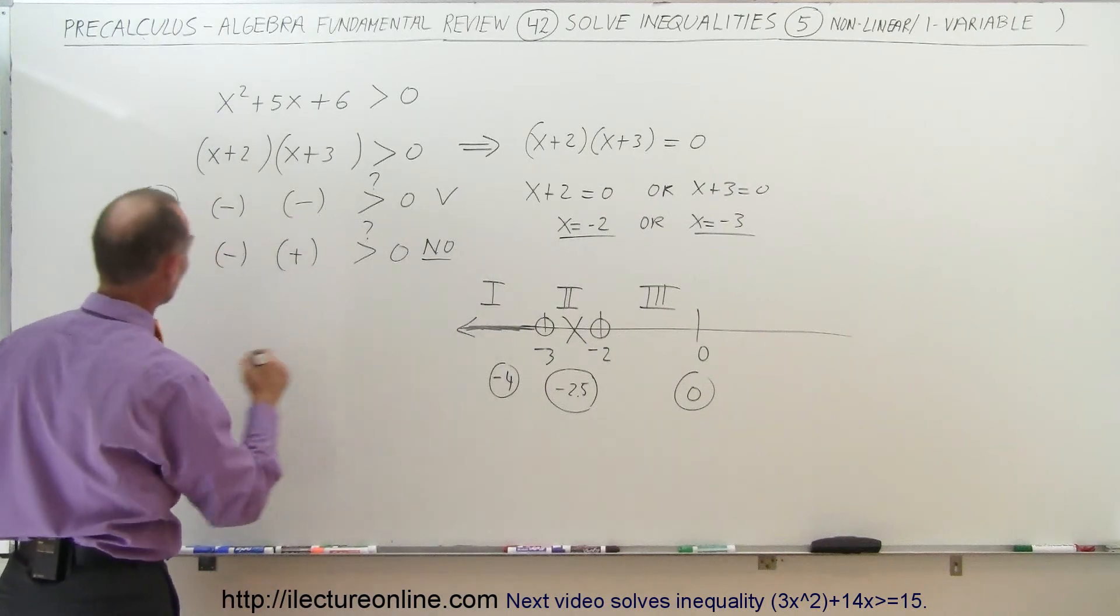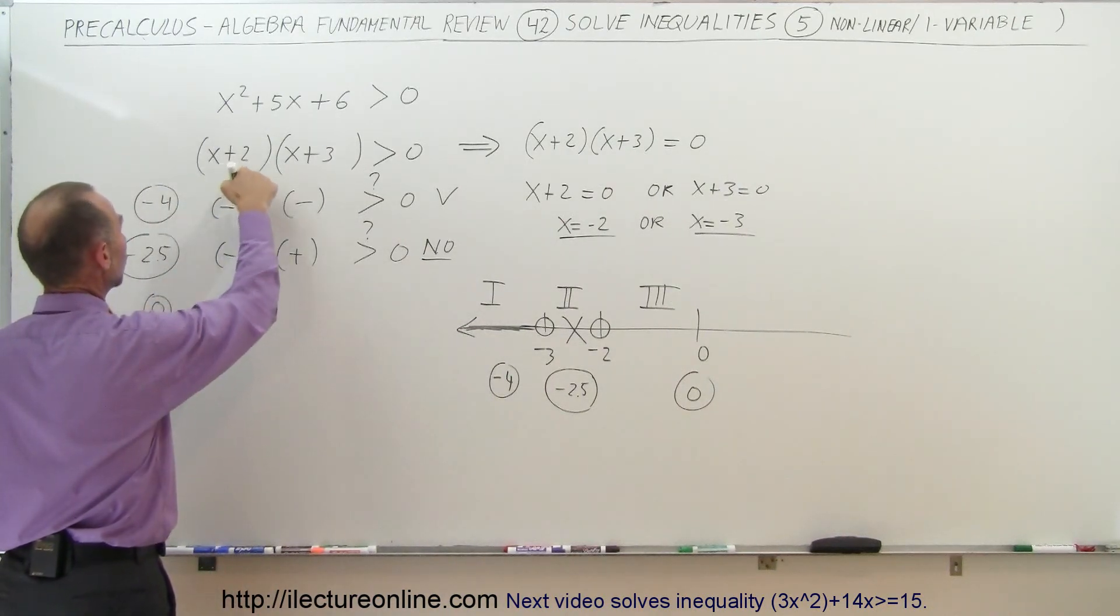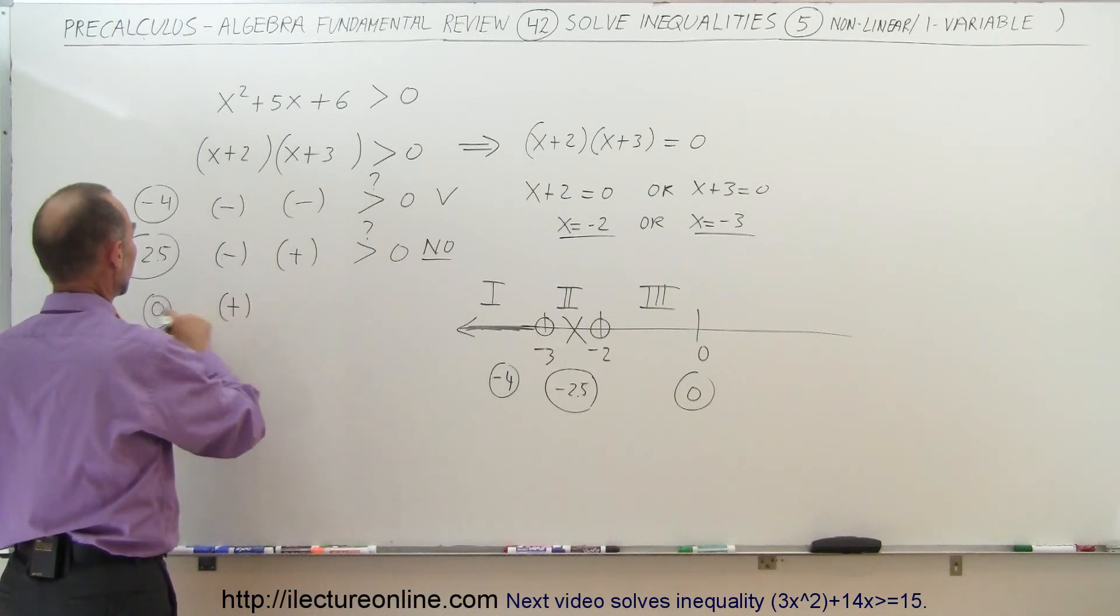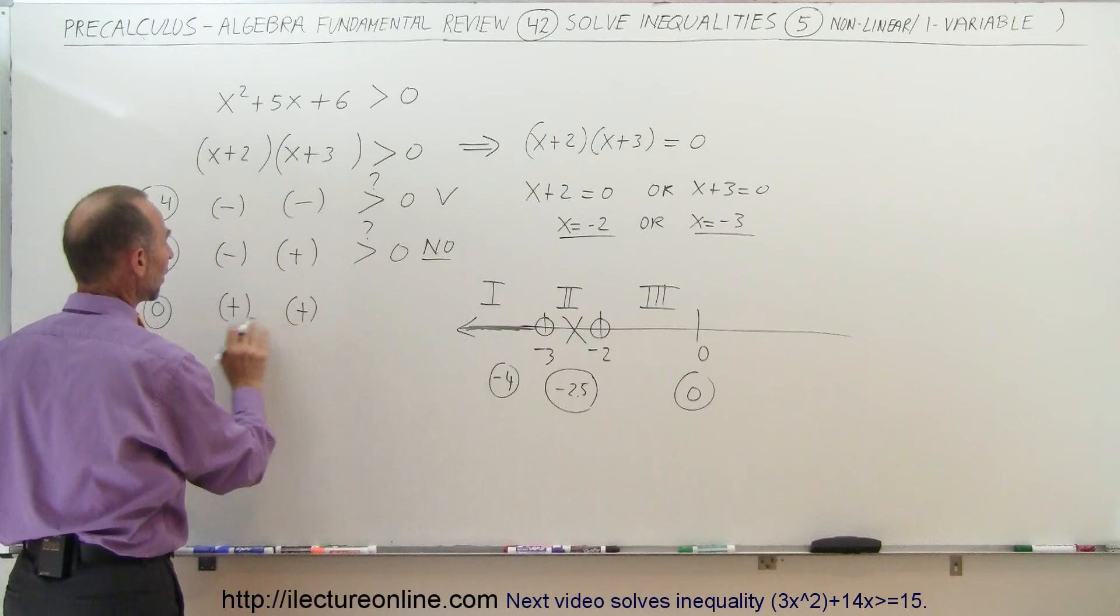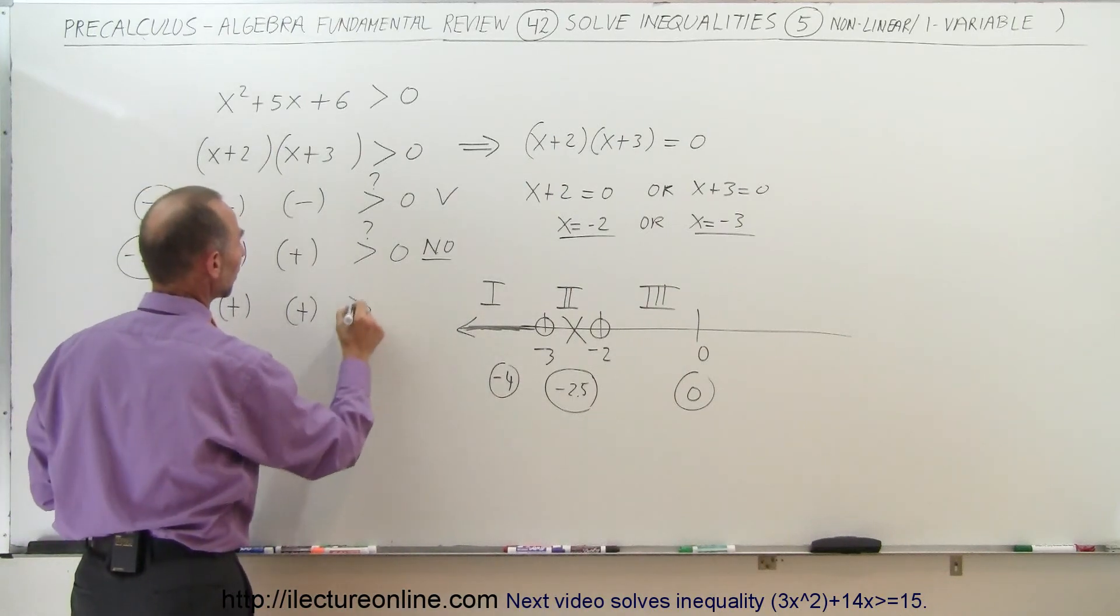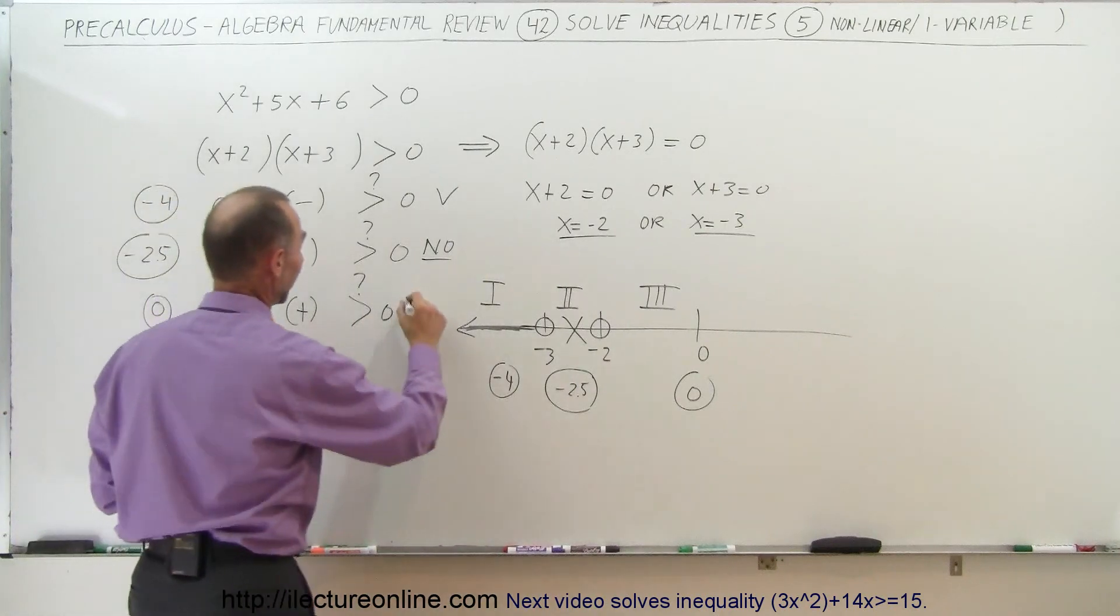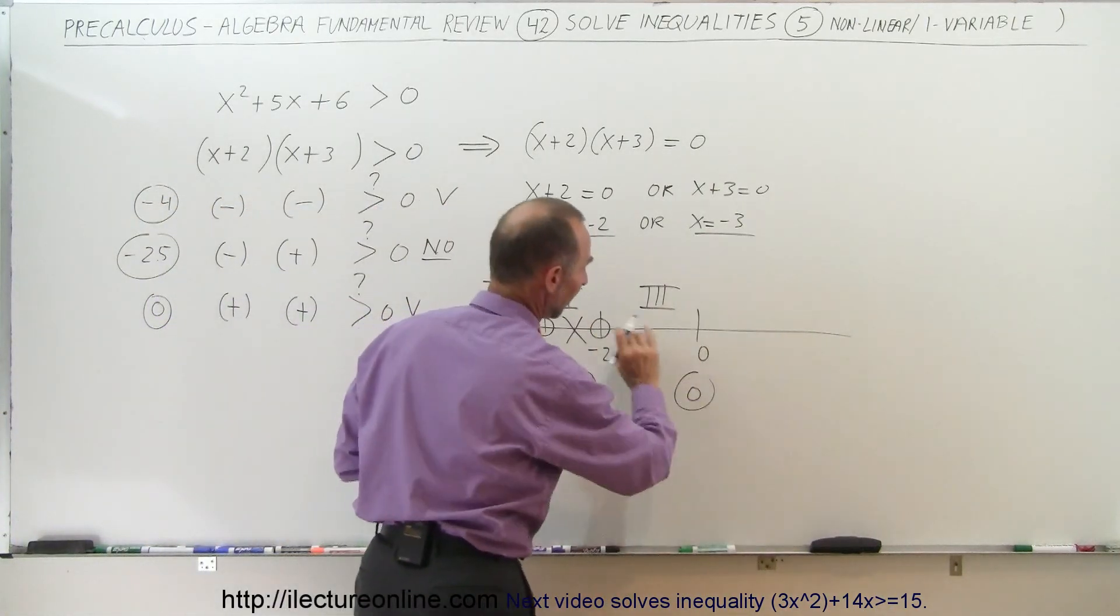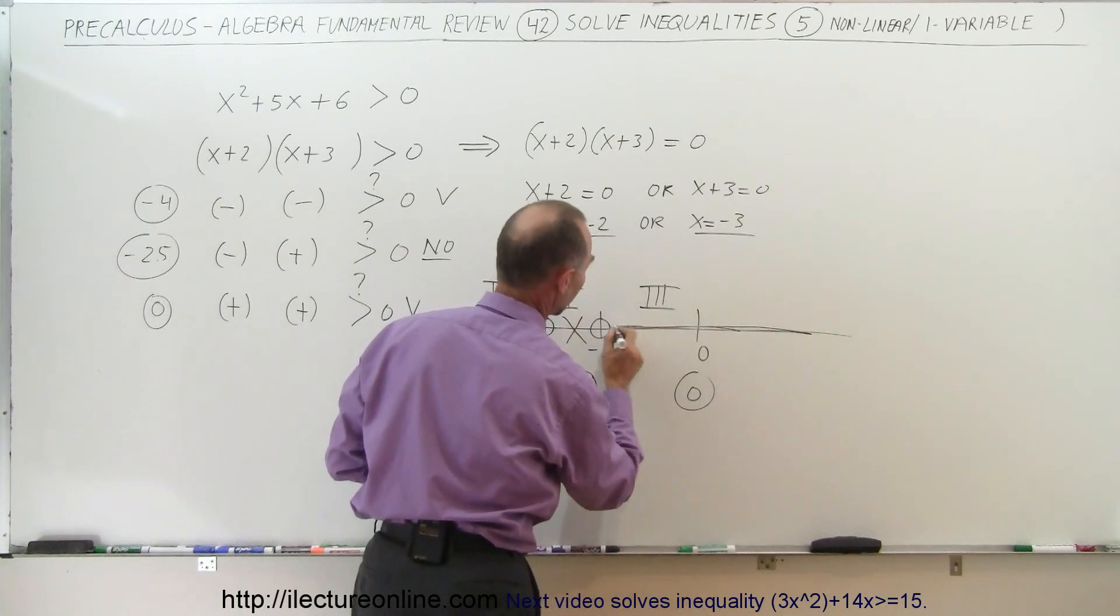Finally, we try our last point, the point zero. When we plug in zero in here, we get zero plus 2. That's a positive quantity. Plug in zero here, zero plus 3 is a positive quantity. We multiply two positive quantities together. Do we get a number greater than zero? And the answer is yes, of course. And therefore, any number to the right, where zero can be found, is also part of the solution.